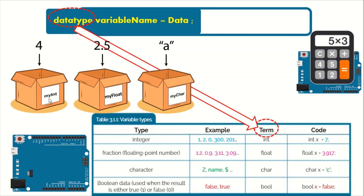You can write x, or 'myInt', or 'momName' — you can write anything for the variable name, but for convenience it's better to write something related to your code so you won't forget it. To initialize it, you write equals and then write the data. So what will the code line look like? It will be: data type, then variable name, then equals, then the information — which is 4.